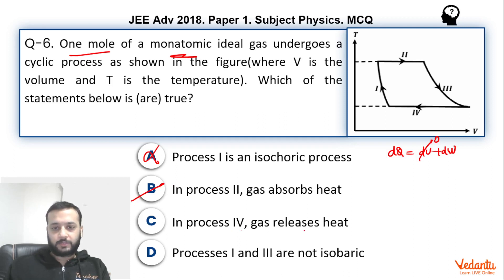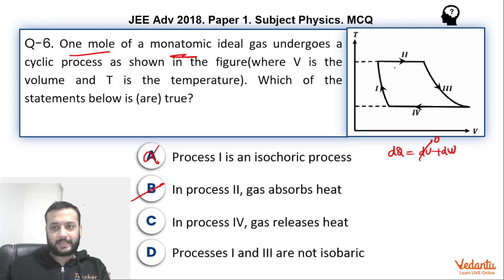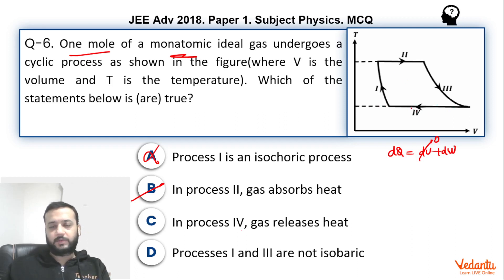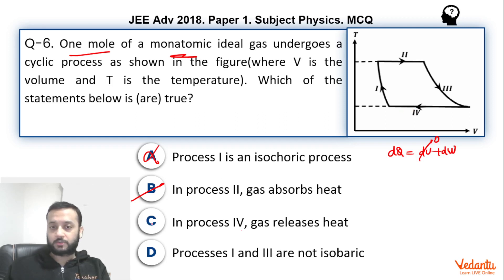In Process 4, the gas releases heat. Process 4 is exactly opposite to Process 2 — it is an isothermal compression. The work done by the gas is negative, so the gas will release heat, because there is no change in internal energy. So this option is also correct.